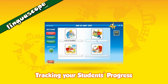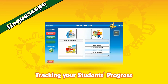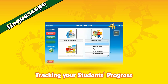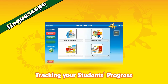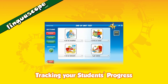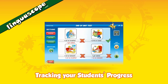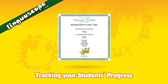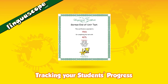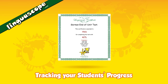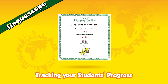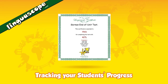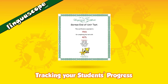Each topic in the beginner section comes with an interactive end of unit test. Students are tested on their listening, reading and writing, and they're given a score for each skill. A certificate with their scores and the vocabulary covered can be printed, which is ideal when homework is set and you want to make sure students have completed the tasks online.